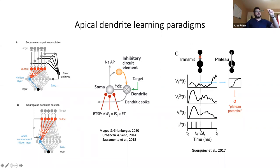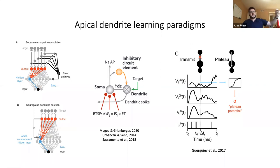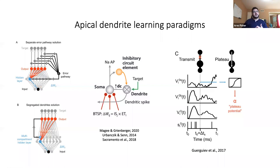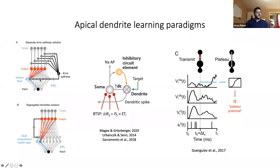Credit assignment is the idea that given an error in the desired output, you want to know which synaptic weights and which neurons to put blame on. Hebbian rules — at least two-factor Hebbian rules that are just pre- and post-synaptic — do not do credit assignment, even though they produce interesting receptive fields that look like those in the cortex. So the question is: how do we do credit assignment? The answer they propose is to leverage the apical dendrite component and look at the plateaus.